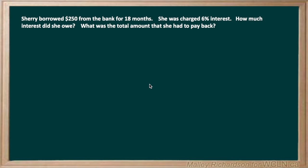So we are first going to solve how much interest Sherry owed. To do this, we want to use our formula of I equals PRT, where I is the interest, P is the principal, or the amount that she borrowed from the bank, R is the annual interest rate, and T is the time in years.